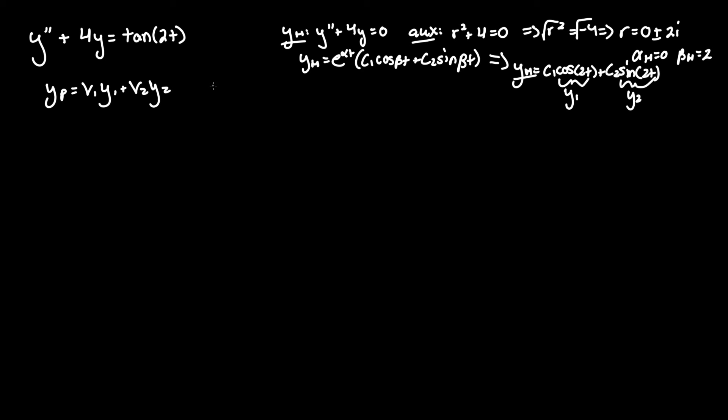So I will be using the Wronskian approach. You could use the systems of equations approach but in my opinion that one sucks compared to this. So v1 therefore equals negative integral of y2 times f of t over our Wronskian value where we take f of t to be the right hand side. Where did I get this formula? You gotta memorize it. That's it.